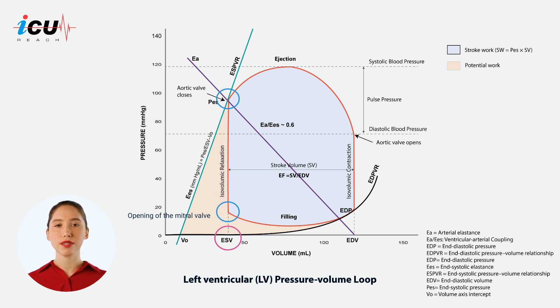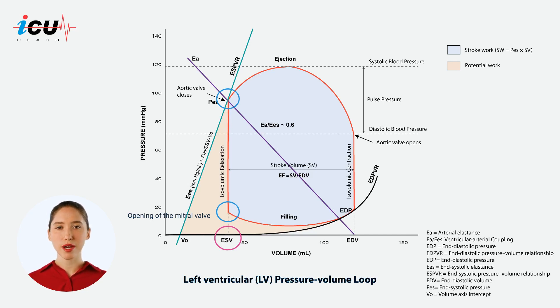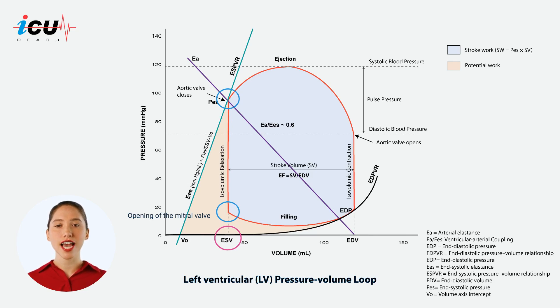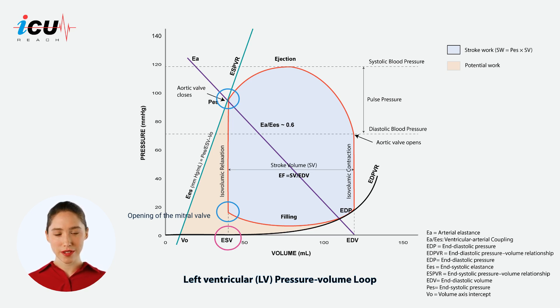This phase is represented by a vertical line moving downwards on the left side of the loop. Important events in this phase include the closure of the aortic valve and a rapid decrease in ventricular pressure while the mitral valve remains closed.